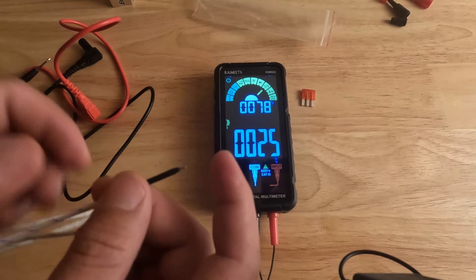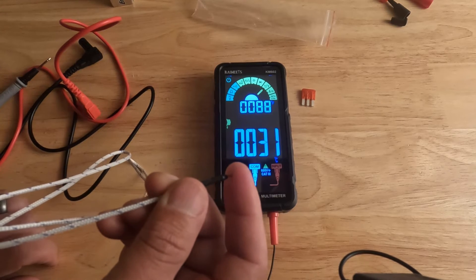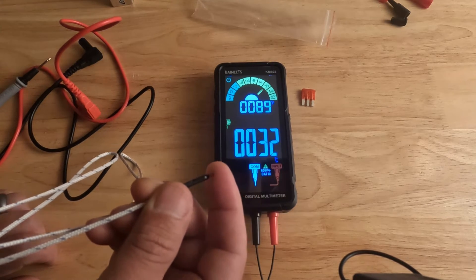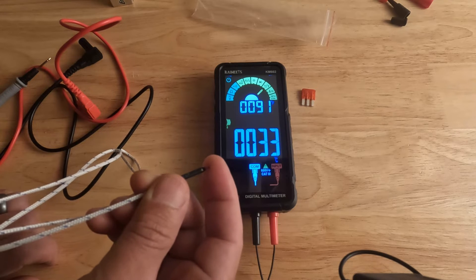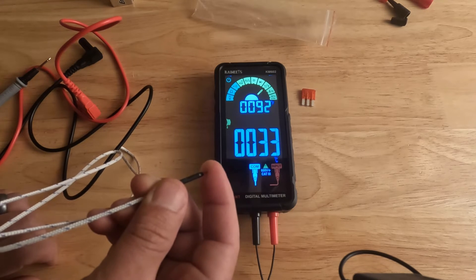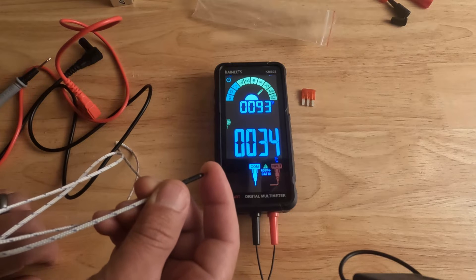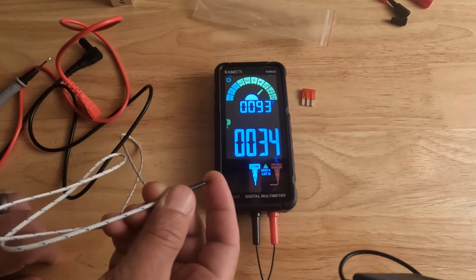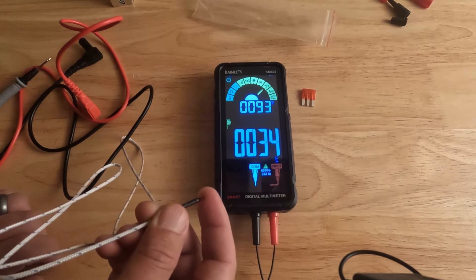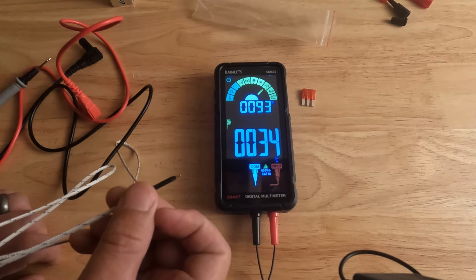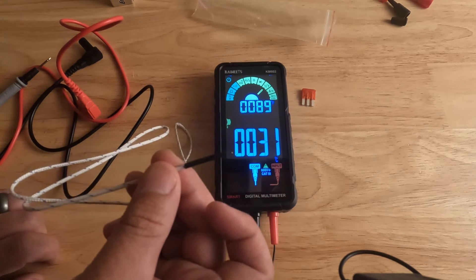We're just going to touch it to our skin and we're going to pick up our skin temperature, which is about 91-92 degrees skin temperature, 33 degrees Celsius. That's just our fingertip. When we let go, it's going to go back to measuring the room temperature. See it dropping.